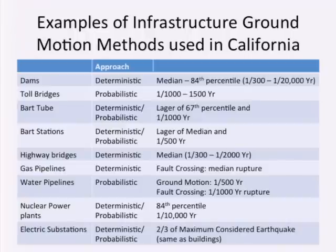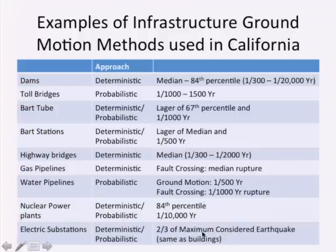That means there's a chance we could have something exceeded. When a big earthquake happens, will our infrastructure survive? The answer is some of it will — probably the majority — but quite a bit won't. Things will be damaged, and that's what we've accepted. The issue of nuclear power plants was discussed; we generally are at about the 1 in 10,000 level for nuclear power plants.